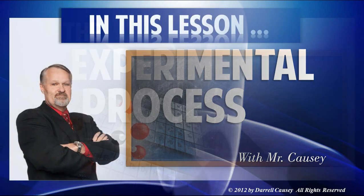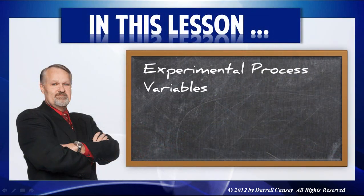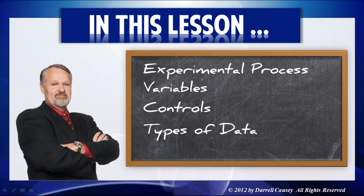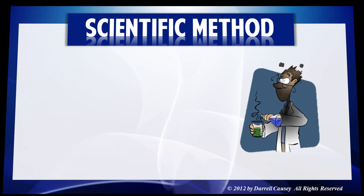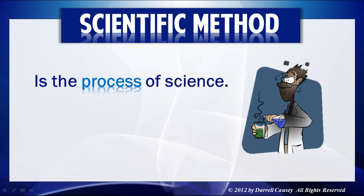In this lesson, we'll learn about the experimental process. We'll talk about variables, controls, and types of data. A lot of you might think that the scientific method itself — the process of science — is sufficient for talking about experimentation, but in reality, the experimental process is not the scientific method. It's a part of the scientific method. It deals with the testing step.